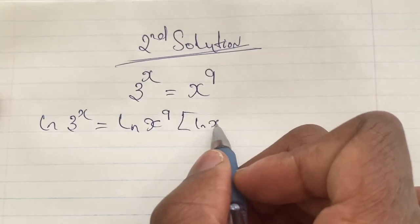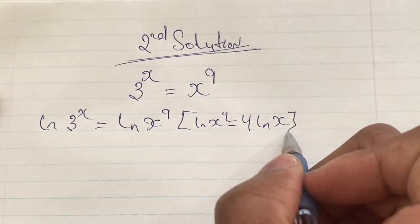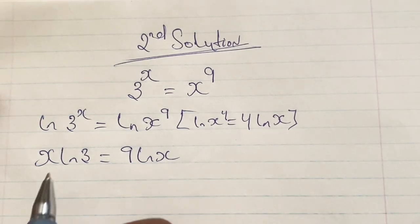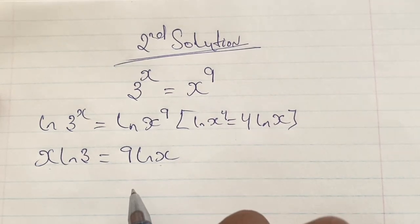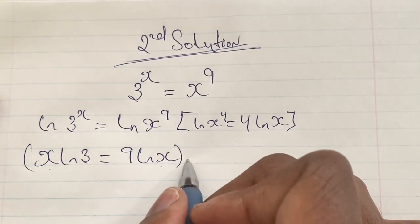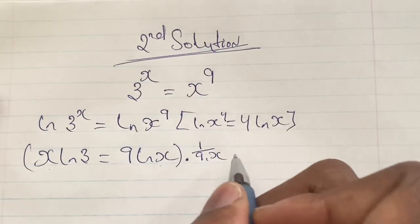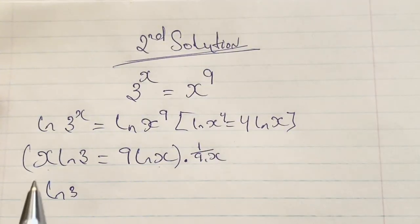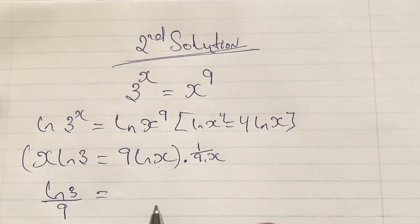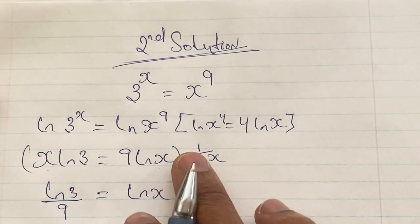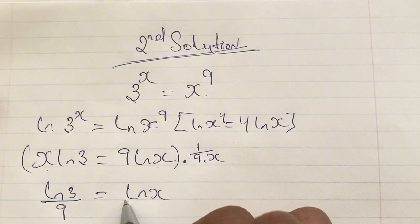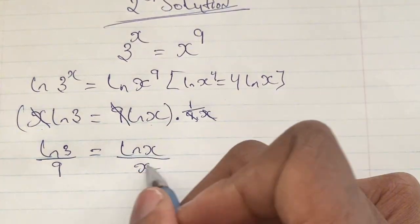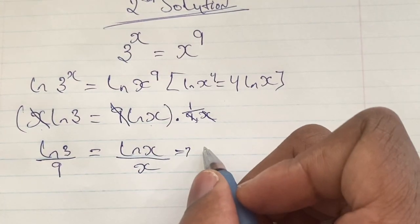Applying the logarithm power rule, where ln of x to the power of y equals y times ln x, we now have x times ln 3 is equal to 9 times ln x. Like in the previous solution, we isolate x on one side by multiplying by 1 over 9 times x. The x in 'x ln 3' cancels out, and the 9 in '9 ln x' cancels out, giving us ln 3 over 9 is equal to ln x over x.